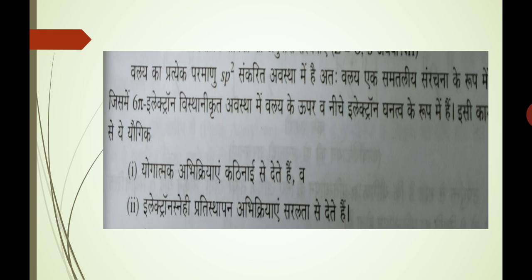This five-membered ring is in sp2-hybridized state. This is the planar structure with 6 pi electrons, which is in sp2-hybridized state. The six pi electrons are delocalized and they are present as electron density above and below the ring. They give electrophilic substitution reactions very easily.